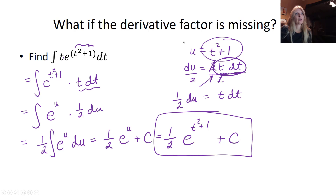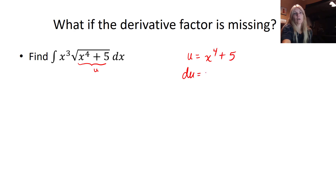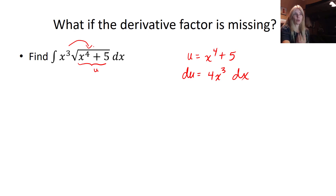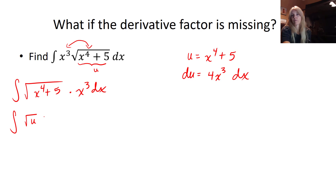We typically like what's under a radical to be our u. So let's try: u equals x to the fourth plus 5, and du equals 4x cubed dx. You always pick the exponent one higher because when you take the derivative you get one exponent lower. Rearranging: x to the fourth plus 5 times x cubed dx.